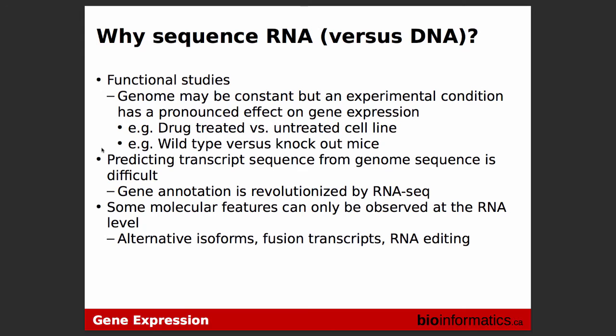Why do we sequence RNA? What information does RNA provide that DNA does not? For example, in functional studies looking at certain conditions or drugs and comparing cell lines, those drugs often affect the transcriptome but not the genome. You run RNA-seq to compare the two conditions. Also, predicting transcript sequences is very hard by just looking at DNA itself — it's a lot easier with RNA-seq. Some molecular features are only present in RNA, like alternate isoforms, fusion transcripts, and RNA editing, which you cannot obtain from DNA sequences.